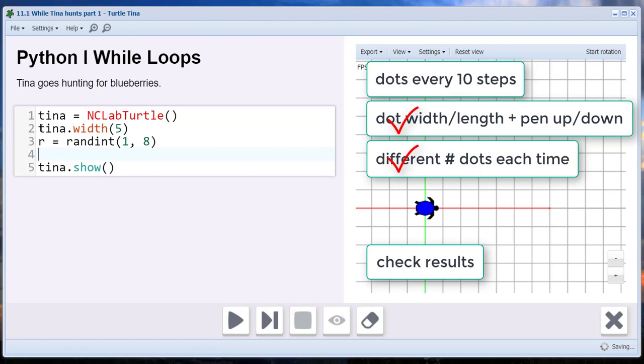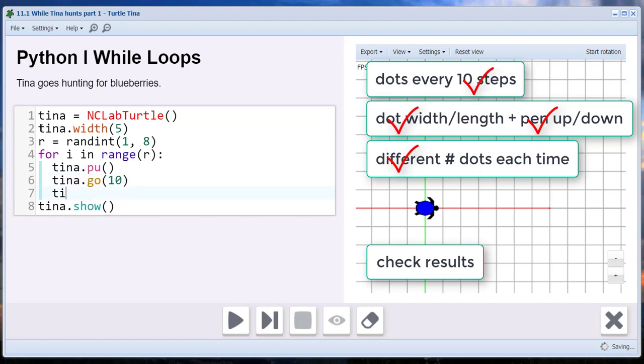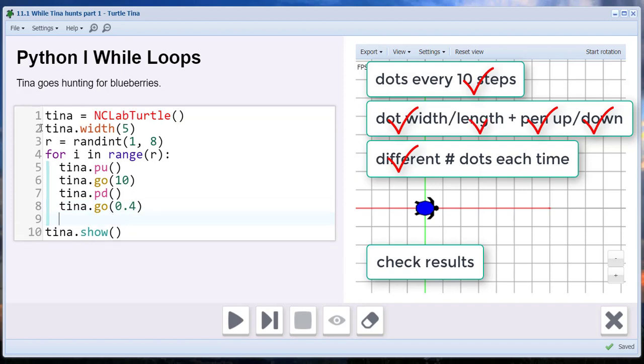And then write our for loop. There's our randomly generated range number, and then Tina is going to start by picking up her pen and going 10 steps. We'll put her in position to create the dot. We'll put the pen down so she can draw and go forward just a short distance to create the dot itself.